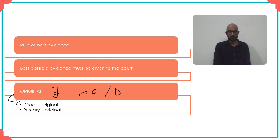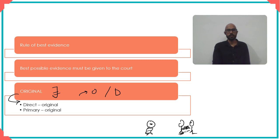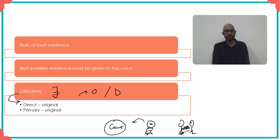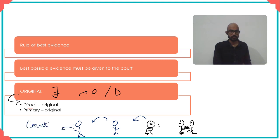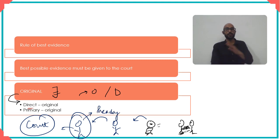When we say oral evidence should be direct, consider an incident — a fight between two people — seen by a person who sat and watched the entire thing. If that person comes to court and speaks, he is the one who originally saw it, so his testimony is direct. However, if he tells someone else, who tells another person, and that final person comes to court, that is hearsay — it is not original.